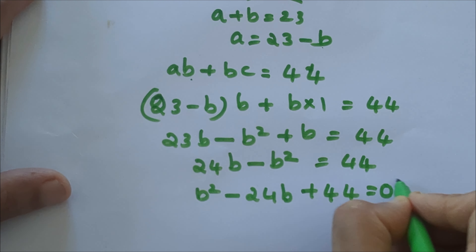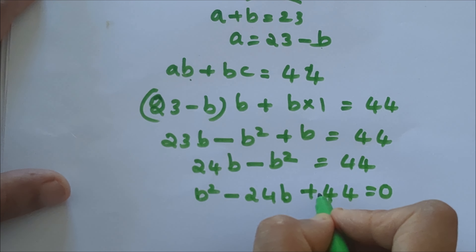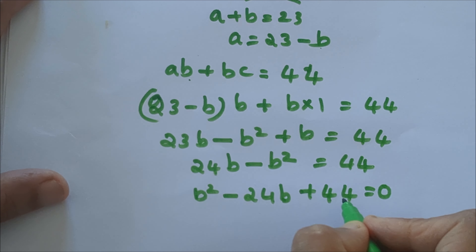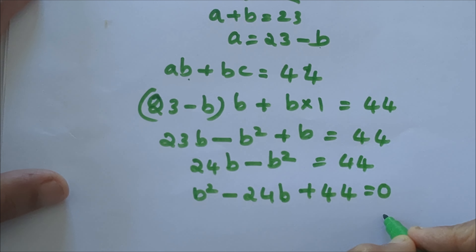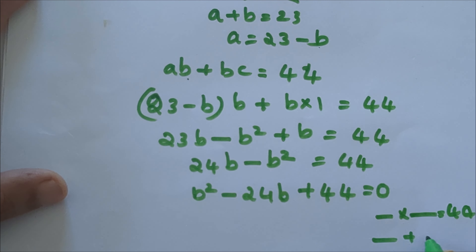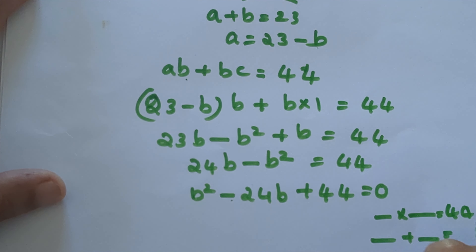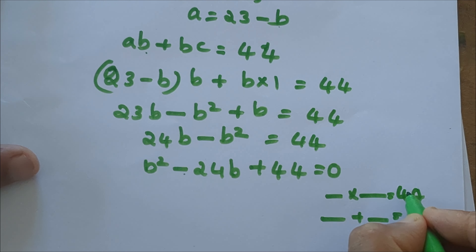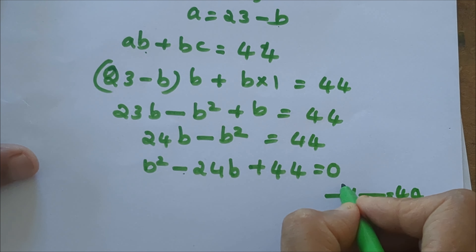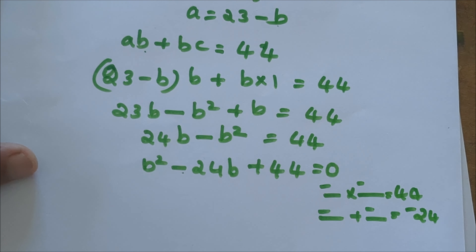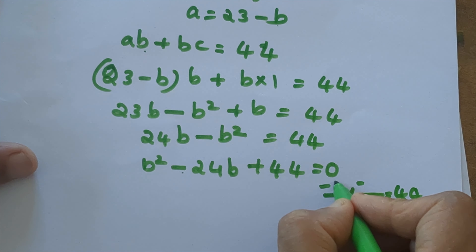We have a quadratic equation, and we need to solve it to find the value of b. The better way to solve this is by the factorization method. We need to find two numbers such that when we multiply them we get 44, and when we add them we get minus 24. Since the product is positive and the sum is negative, both numbers must be negative.